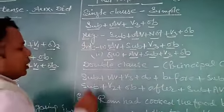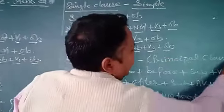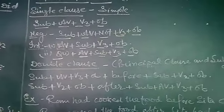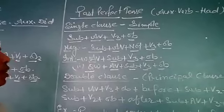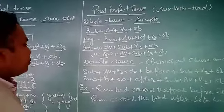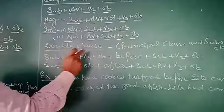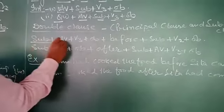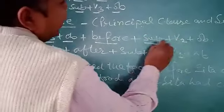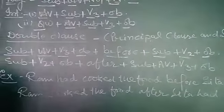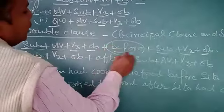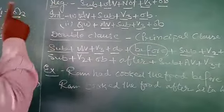Now come to the double clause. First, let me clarify what a principal clause is. The subject whose work is done first is called the principal clause, and the verb done second is called the subordinate clause. If there is a double clause, you apply: subject, auxiliary verb 'had,' verb third form, plus object, then 'before,' then subject, verb second form plus object. You can identify such sentences by the word 'before' — that signals a double clause with past perfect tense.